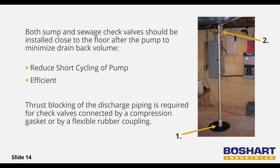When installing valves with flexible rubber couplings or compression gasket connections, thrust blocking is required to prevent lateral movement or blow-off that could separate those connections. You can see the wooden thrust protection installed at the top of the piping in arrow two. Not all plumbing codes are equal, so it is the responsibility of the installer to understand the local code before installing a system.